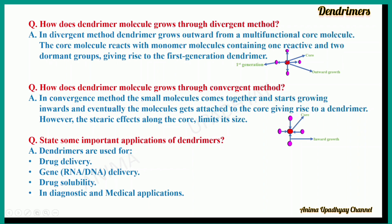How does the dendrimer molecule grow through the convergent method? The convergent method is the converse of the divergent method. In the figure, you can see that the arrows are pointing inwards towards the core molecule. In the convergent method, small molecules come together and start growing inwards, and eventually the molecules get attached to the core, giving rise to a dendrimer. However, the steric effects along the core limit its size.